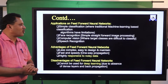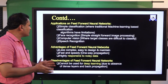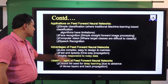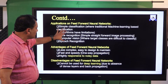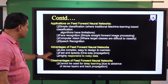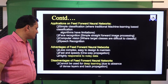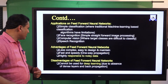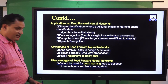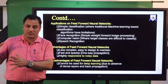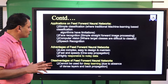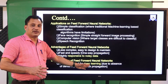Applications of feed forward neural networks include classification, face recognition, computer vision, and speech recognition. Its advantage is that it is less complex, easy to design and maintain, and is also tolerant to noisy data. Its disadvantage is that it is not suitable for deep learning applications, which are now widely used in the market.